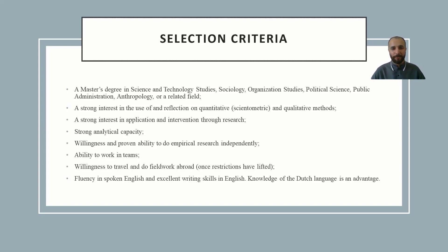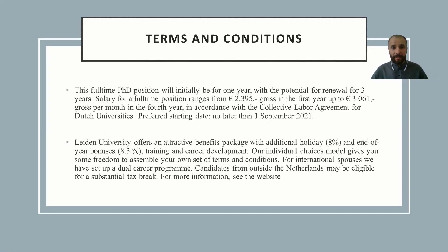This is a full-time PhD position, initially for one year with the potential for renewal for three years. The salary for a full-time position ranges from 2,300 euro gross in the first year up to 3,000 euro gross per month in the fourth year, in accordance with the collective labor agreement for Dutch universities. The preferred starting date is no later than 1st September 2021.